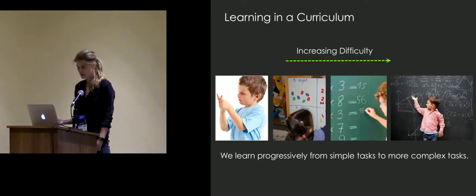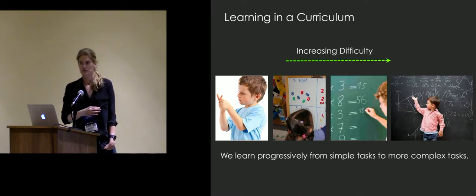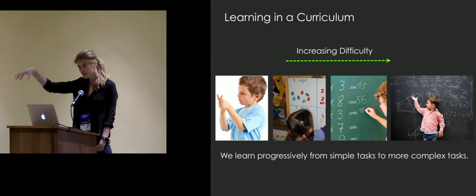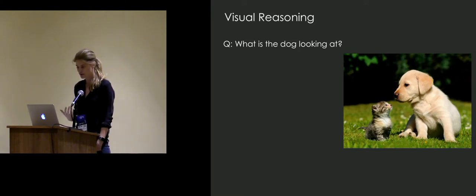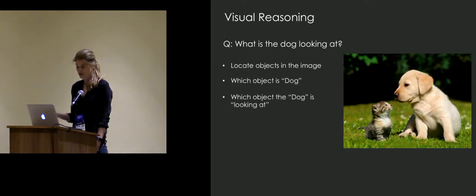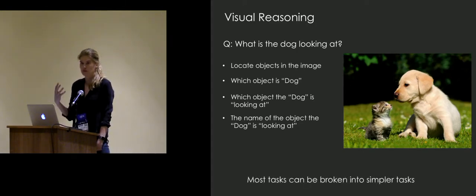Humans learn tasks in a progressive manner — we don't start by teaching kids difficult geometry; we start with what numbers mean, then add numbers, and progressively learn more complex things. We should build knowledge in a compositional way, because then you can reuse whatever you learned from the previous task in the new task. Visual reasoning is one example: if I have a question like 'what is the dog looking at?', you can break it down into simpler tasks — locate objects, identify the dog, find what it's looking at, then produce the name of that object.